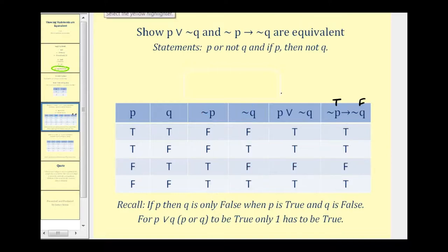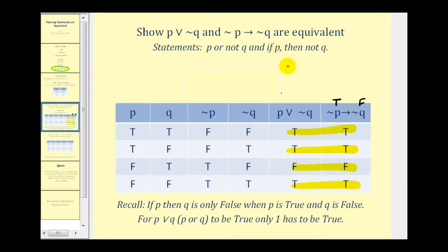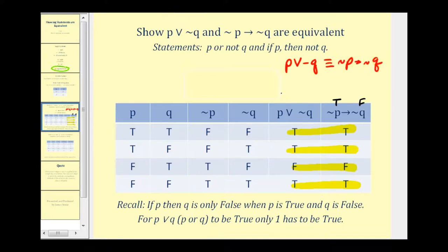We've now shown these two statements are equivalent because they match up perfectly: true, true, false, true. So we can say that p∨¬q is equivalent to if ¬p then ¬q.